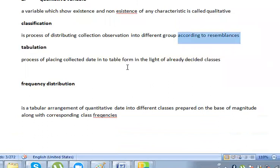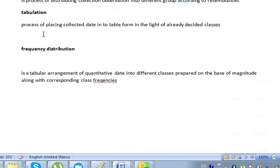I will tell you what is tabulation. When these classes are made, when we decide the classes, we will put this data into the table. What do you call tabulation? Tabular arrangement of data into different classes prepared on the base of the magnitude with corresponding frequencies.